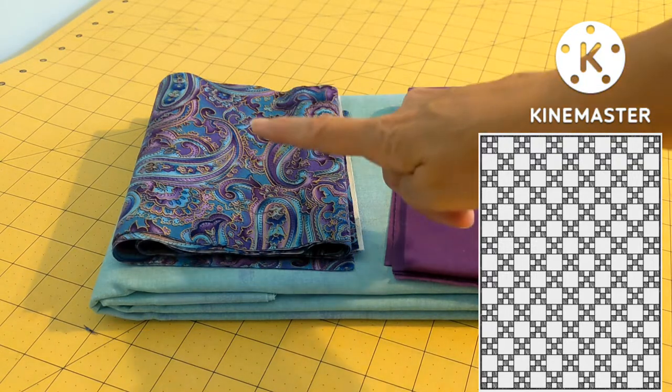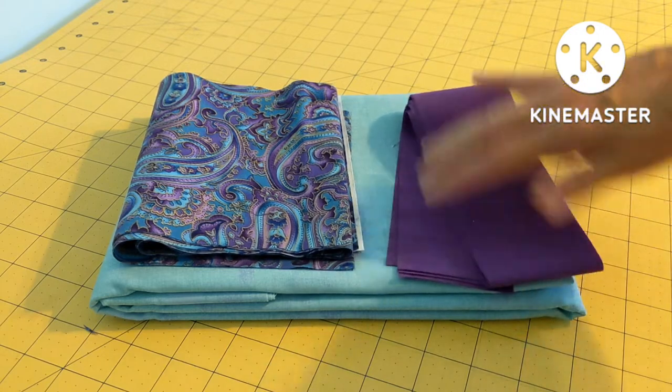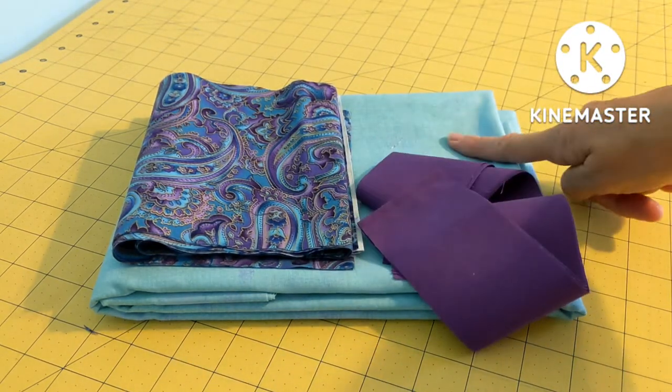For my quilt I'm using this fabric as my solid square and I'm using these two colors for my 3x3 grid.